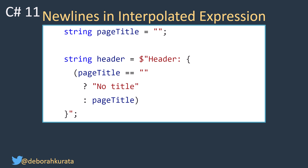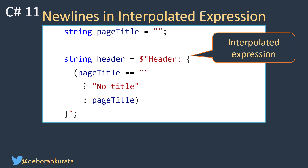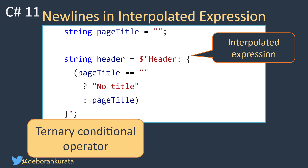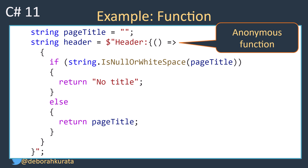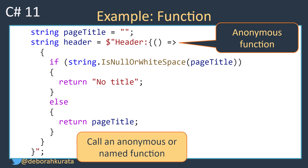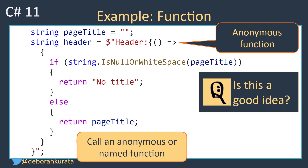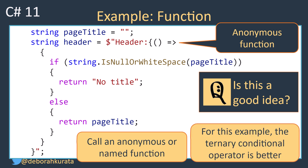New in C# 11, out in 2022, we can use multi-line interpolated expressions. This makes the code within the curly braces a bit easier to read. In this example, we're using the ternary conditional operator — if the page title variable is empty, we set no title; otherwise, we set the page title. Again, any valid C# expression can be provided here. We can even define a full function using an arrow function or anonymous function. But is this a good idea? Maybe not — for this particular example, the ternary conditional operator might be better, or put this code into a named function and call that instead.